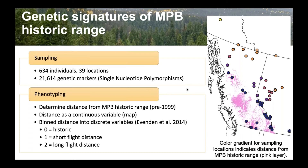We sampled throughout the lodgepole range in Canada — we don't have any samples from the US in this dataset, though we're looking to do that in the future. We then had to phenotype these samples to see if there are differences between the historic and novel range, falling back on those same historic range estimates based on climate and site data.